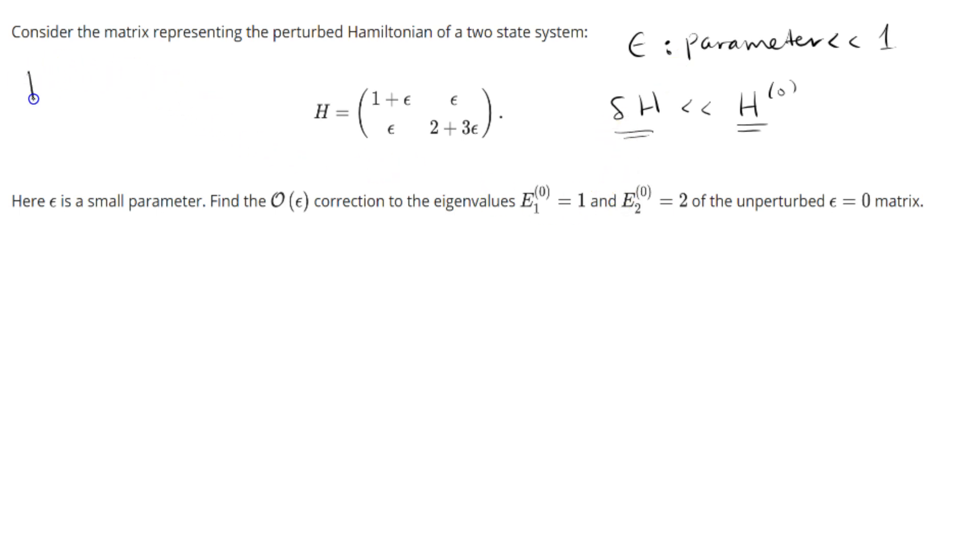Immediately I see that we can write our unperturbed Hamiltonian as just (1, 0; 0, 2). And then our perturbation we can write as epsilon times (1, 1; 1, 3). If you add these two together, you'll get this guy, which you can verify yourself. We've got to find the first-order corrections to the eigenvalues E1^(0) = 1 and E2^(0) = 2.